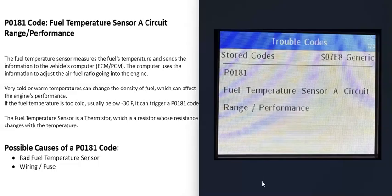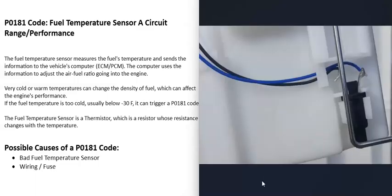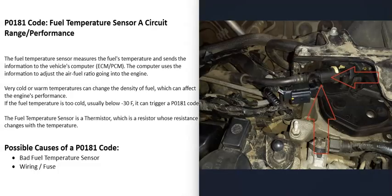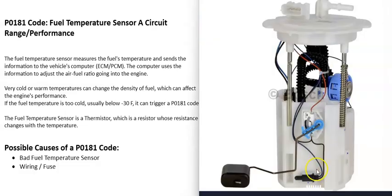The first possible cause is that the fuel temperature sensor has gone bad and just needs to be replaced. It is very common for these to be located on the fuel pump, usually inside the gas tank, but they can also be located at the fuel rail or on the gas line going up to the engine. It can vary, so it's a good idea to get a diagram showing where all these sensors are located. These fuel temperature sensors are thermistors — basically a resistor whose resistance changes as the temperature changes.